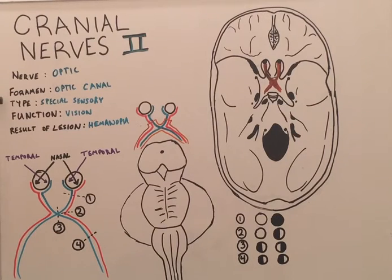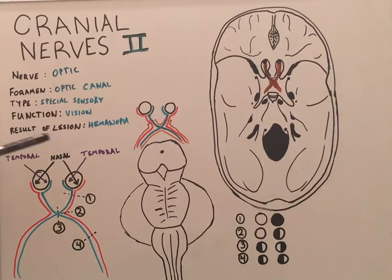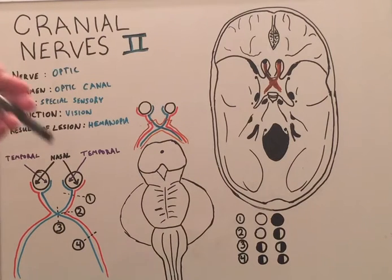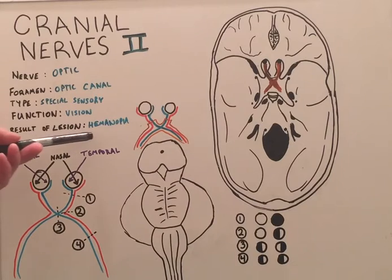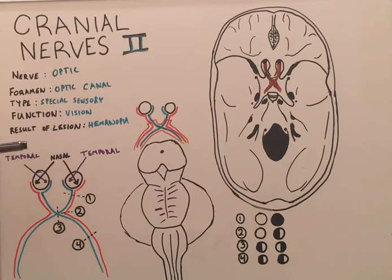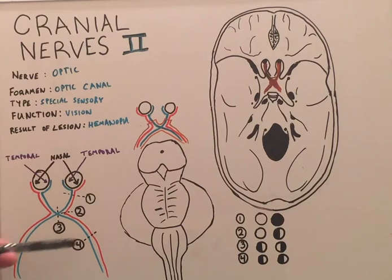The optic nerve is a special sensory type of nerve and its function deals with our sense of vision. The result of a lesion is termed a hemianopia, or a bilateral or hemilateral blindness. There are many different pathologies and hemianopias possible based on where the lesion is along the course of the optic nerve.